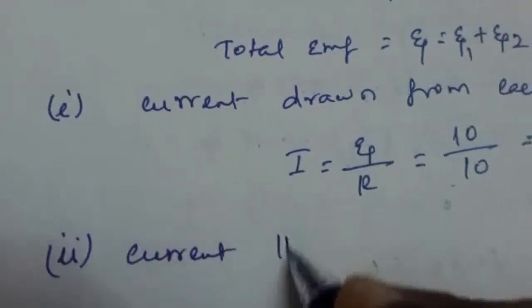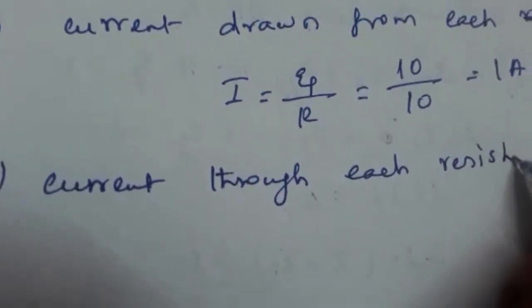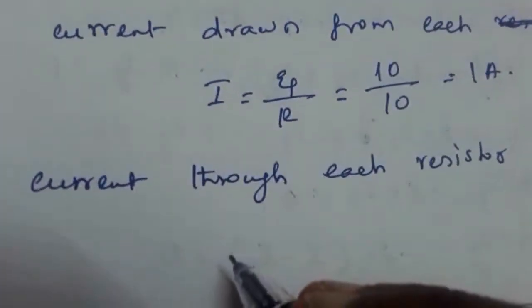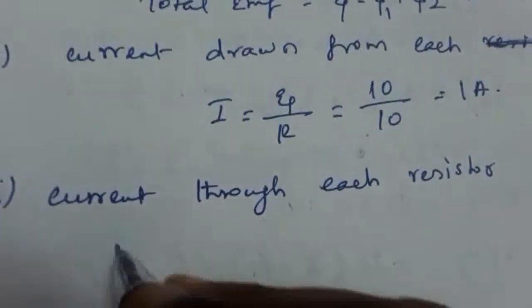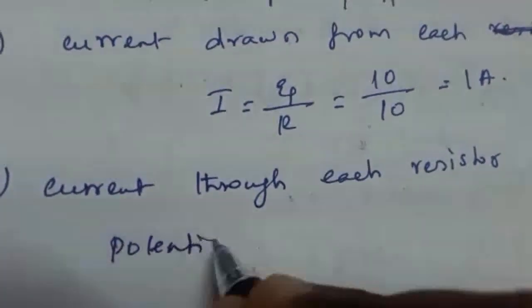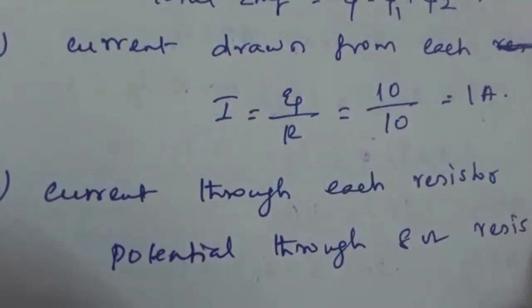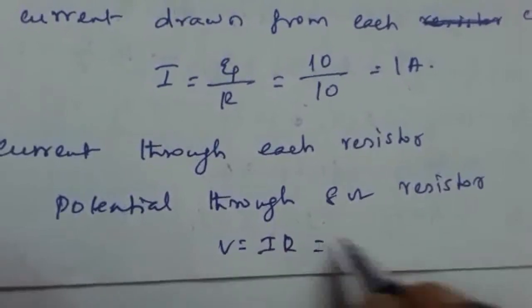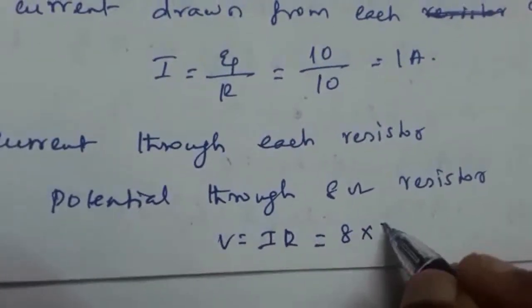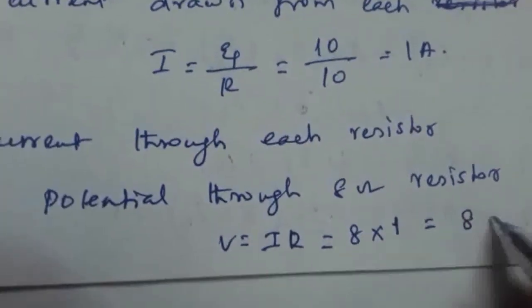The second part is the current through each resistor. First we find the potential across the 8 ohm resistor using V = IR = 1 × 8 = 8 volts. The remaining potential across the parallel combination is 10 − 8 = 2 volts.